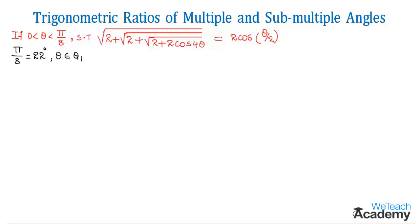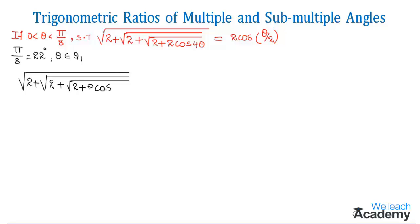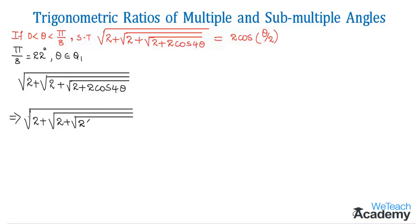In order to prove, let us consider the LHS: √(2 + √(2 + √(2 + 2cos4θ))). By taking 2 as the common factor we get √(2 + √(2 + √(2(1 + cos4θ)))). Now cos4θ can be written as cos(2·2θ).